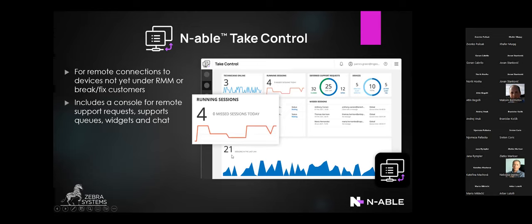Next up is TakeControl. You might ask why you need TakeControl if you already have remote access in RMM. The answer is for remote connections to devices that are not under RMM — either you have a different contract with customers where you don't provide the proactive solution, or you just need to fix their problems. You might also need to add a new customer with an urgent issue. Even when you need to install RMM agents, you can do that through TakeControl standalone and then have them in your central management.